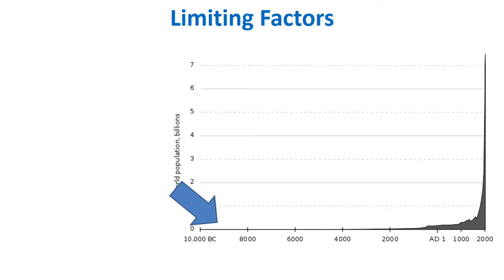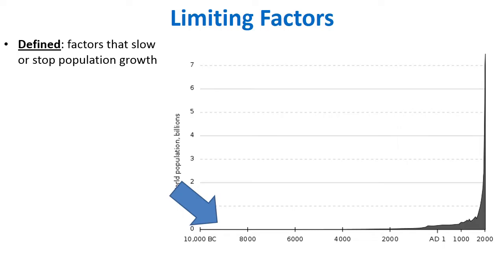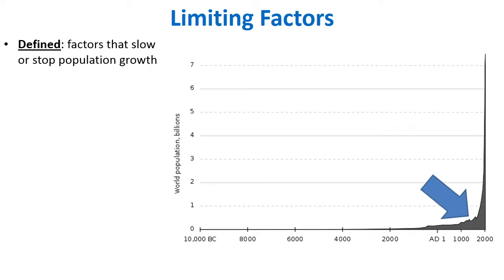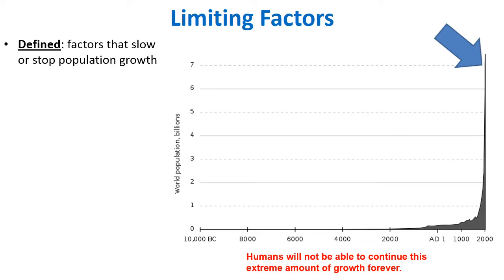The struggle to survive comes down to limiting factors — things that slow or stop population growth. A graph of human population going back to 10,000 BC shows that for most of human history the population was very small and grew slowly. But a couple hundred years ago the population skyrocketed. This exponential growth cannot continue forever — eventually a lack of resources will prevent it. These limiting factors affect not just humans but all life on this planet.